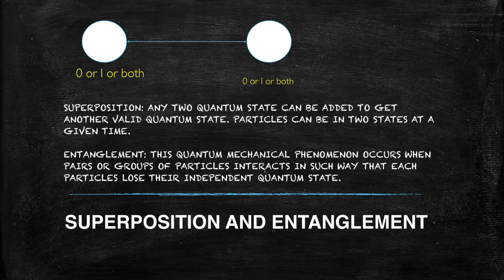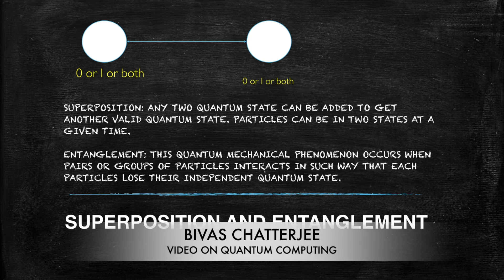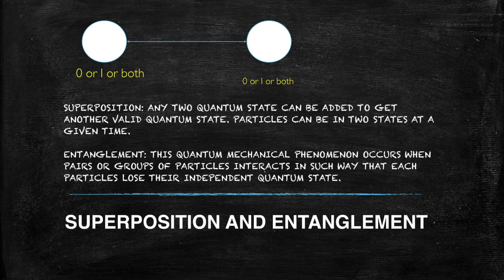The other concept is entanglement. This quantum mechanical phenomenon occurs when pairs or groups of particles interact in such a way that each particle loses its own independent quantum state and they become a new identity carrying a different independent quantum state. These are the two core concepts — superposition and entanglement — which are also the basic foundation of designing and developing quantum computing.